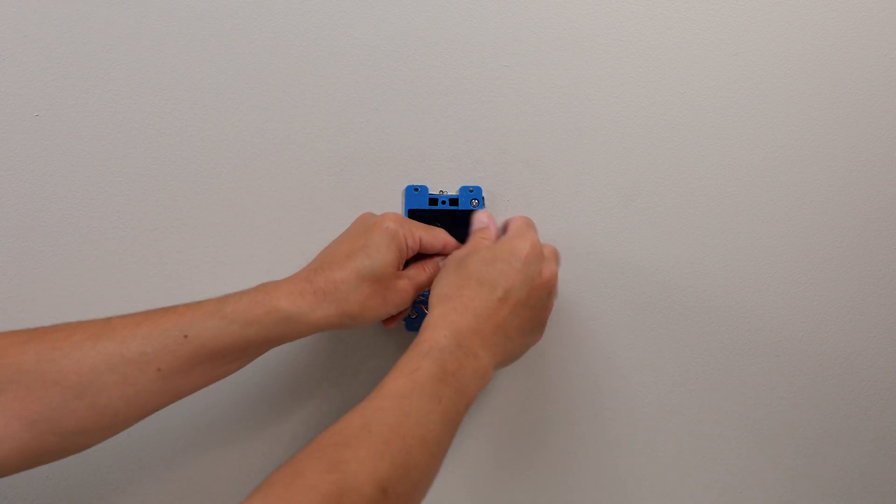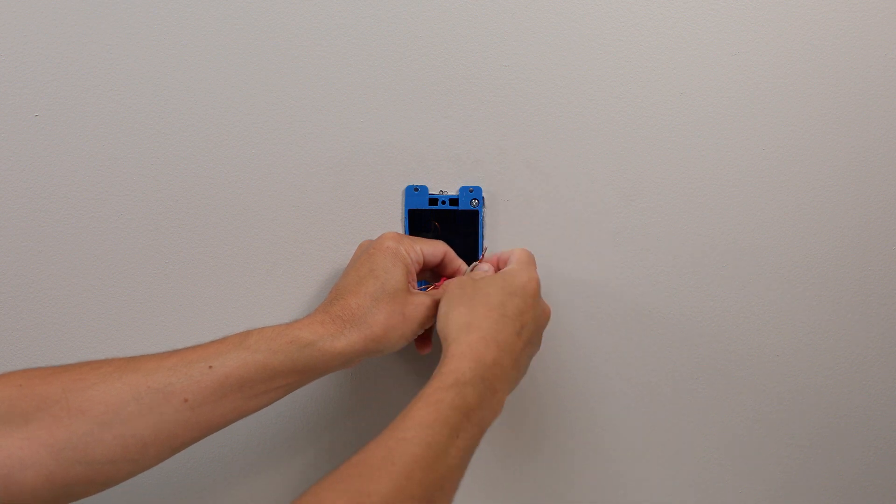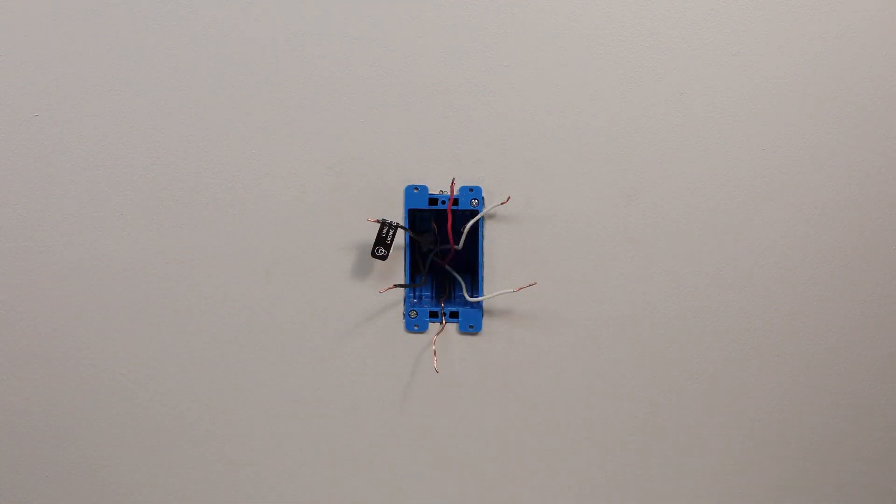Lastly, remove the wire nuts from the neutral wires, the white ones again. Now you can install a smarter switch.